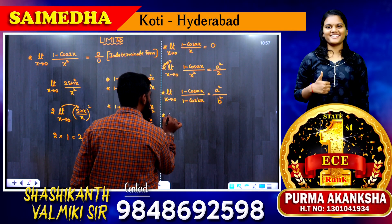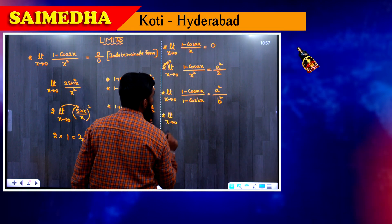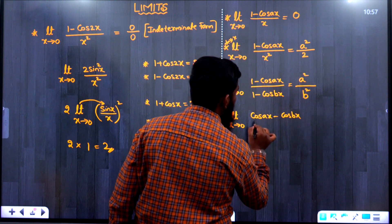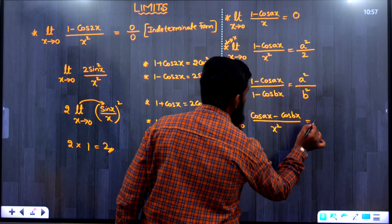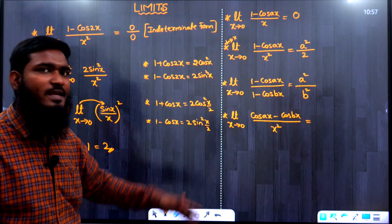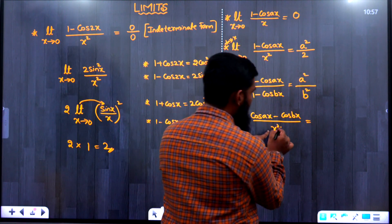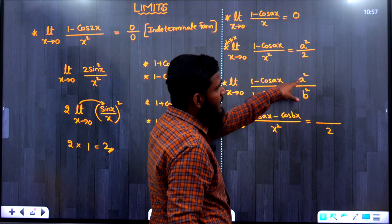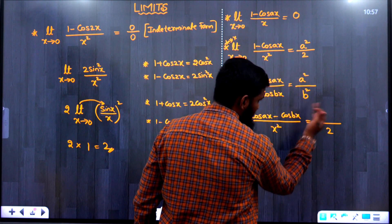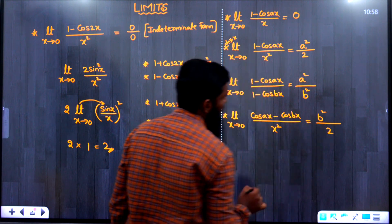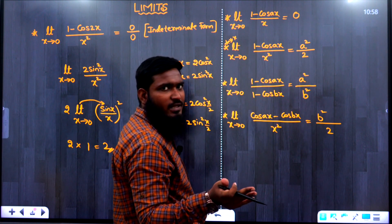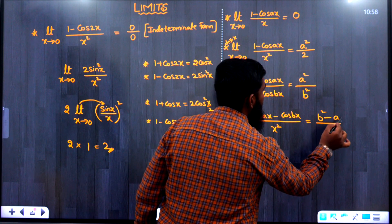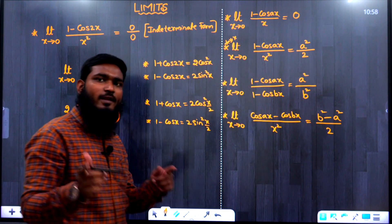Next formula: limit x→0 of (cos ax − cos bx)/x². Here, for cos ax the 'a' value gives a², and for cos bx the 'b' value gives b². Since we have a minus sign and denominator x², the answer is (b² − a²)/2. Note that we start from the right side: b² minus a².